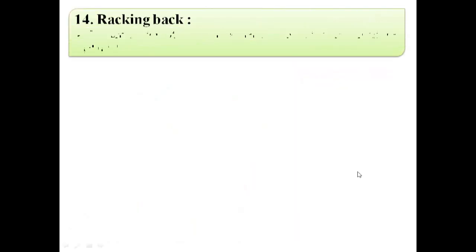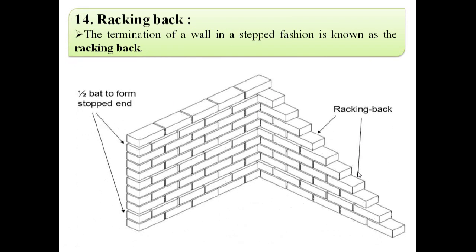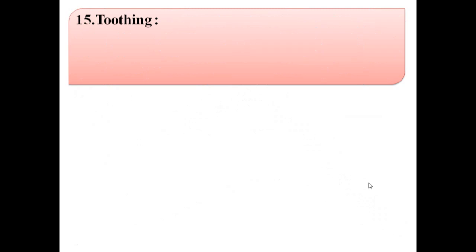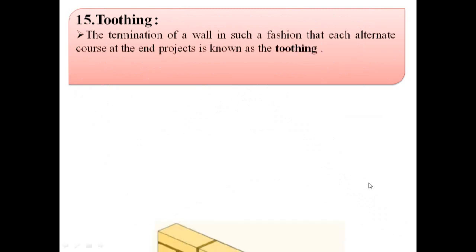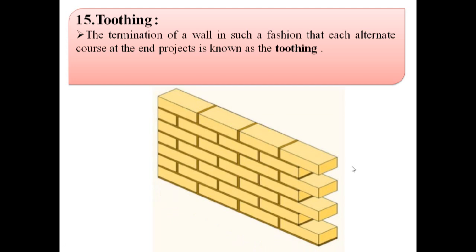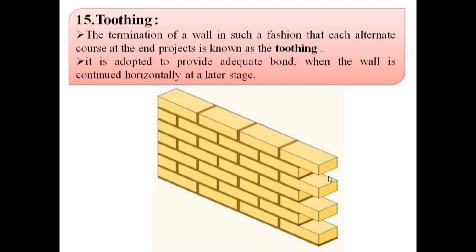The next term is racking back. The termination of a wall in a stepped fashion is known as racking back. In this image we can see this is the termination of a wall in a stepped fashion, and it is known as racking back. The last term is toothing — the termination of a wall such that each alternate course at the end projects is known as toothing. Toothing is adopted to provide adequate bond when the wall is continued horizontally at a later stage.